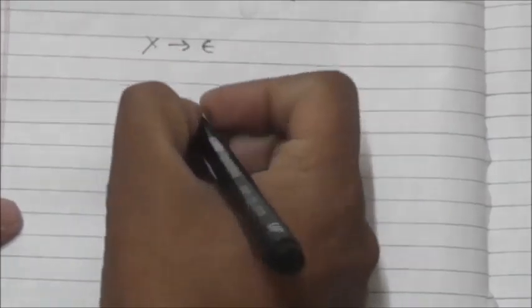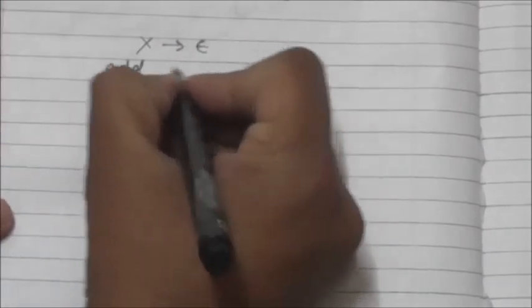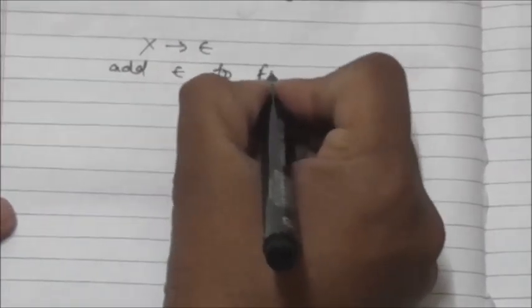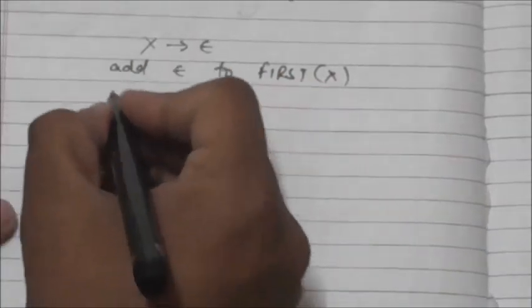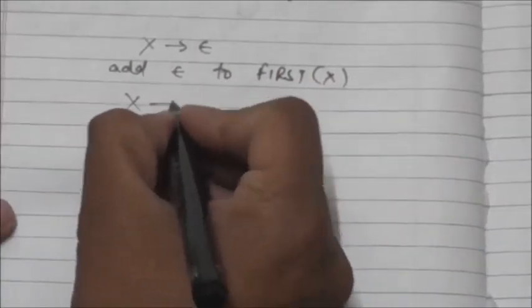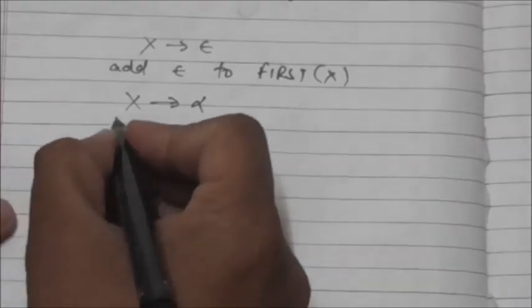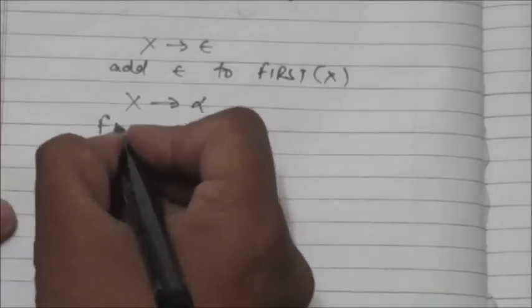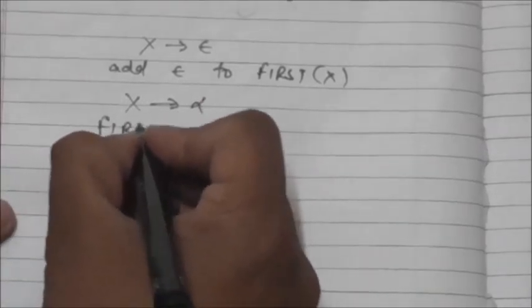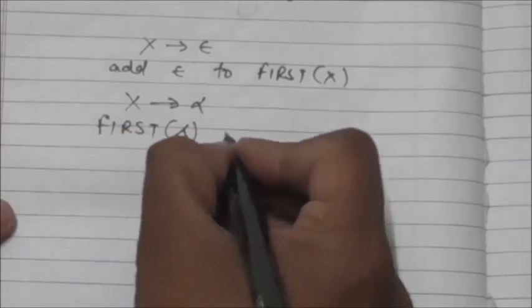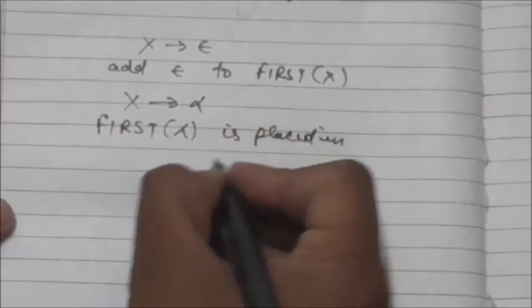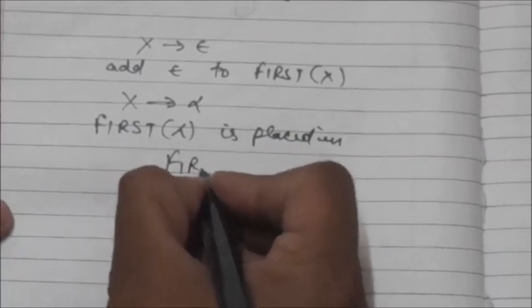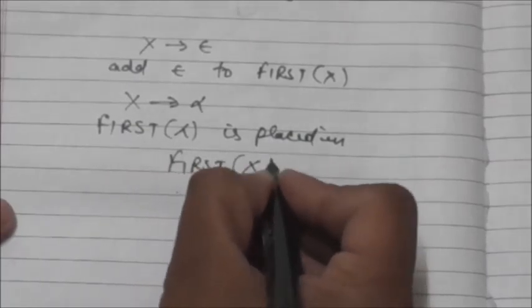If there is a production X derives empty string, then we add empty string to FIRST of X. And if there is a production X derives alpha, then FIRST of alpha is placed in FIRST of X.